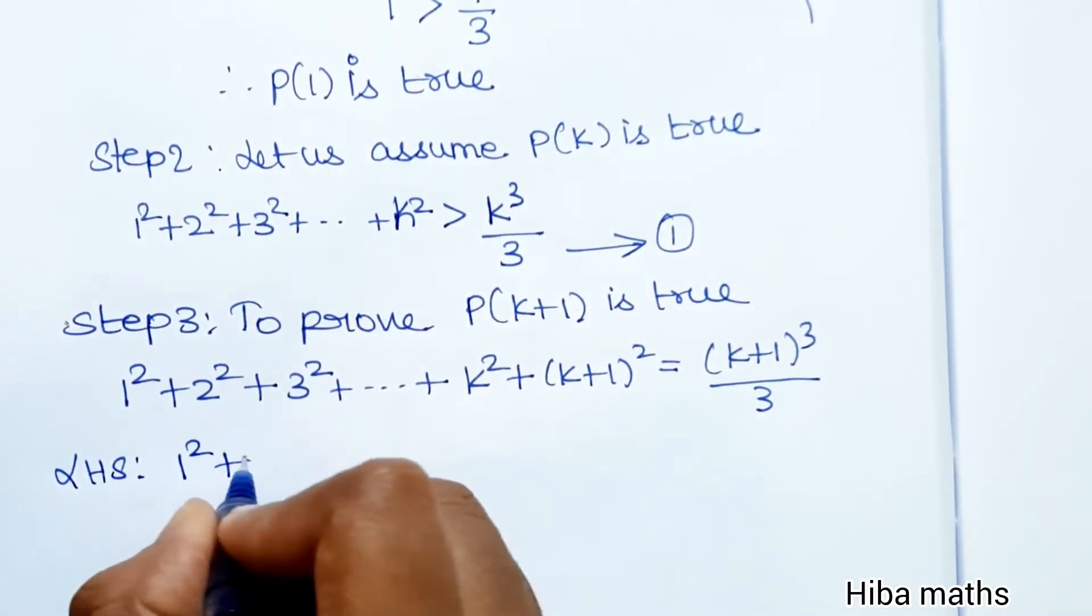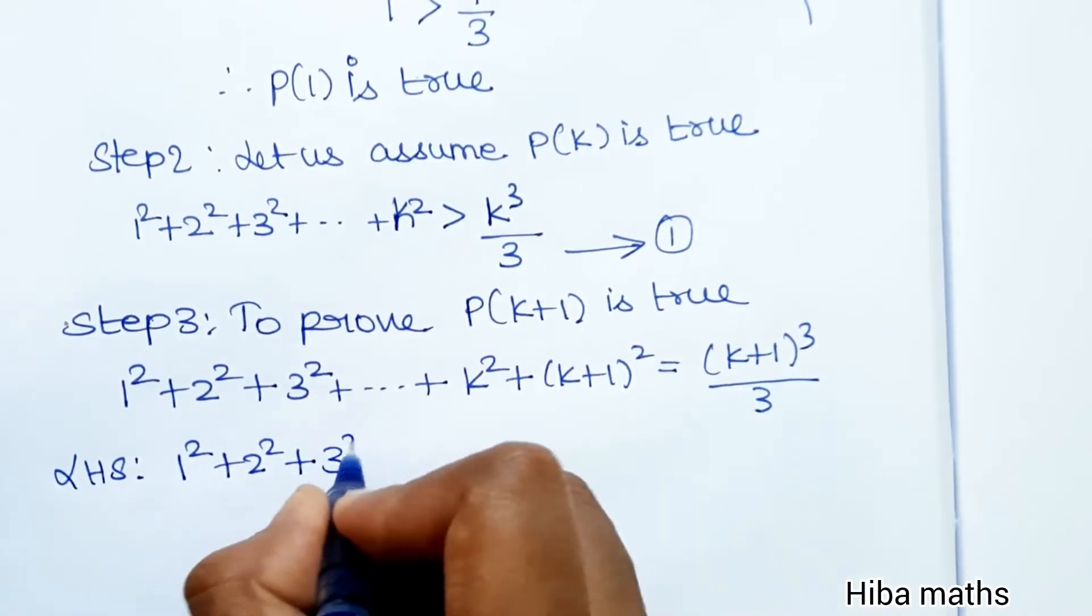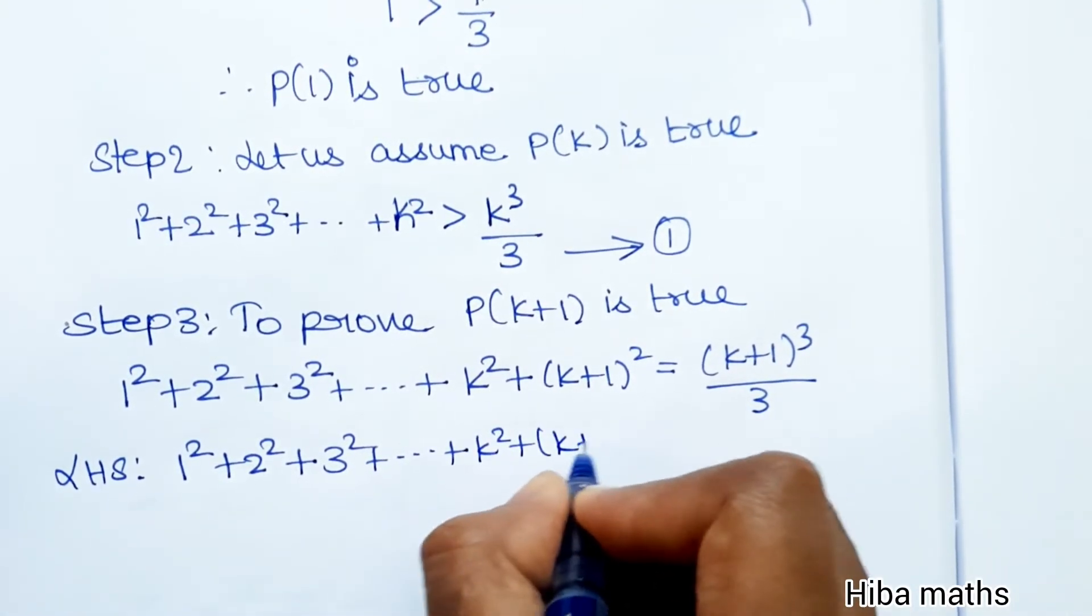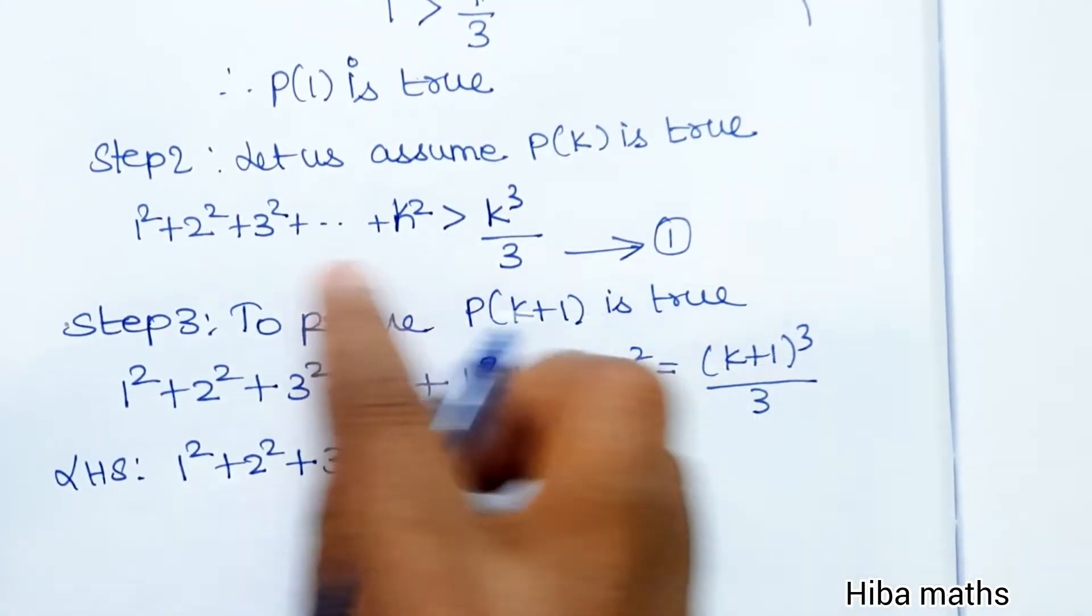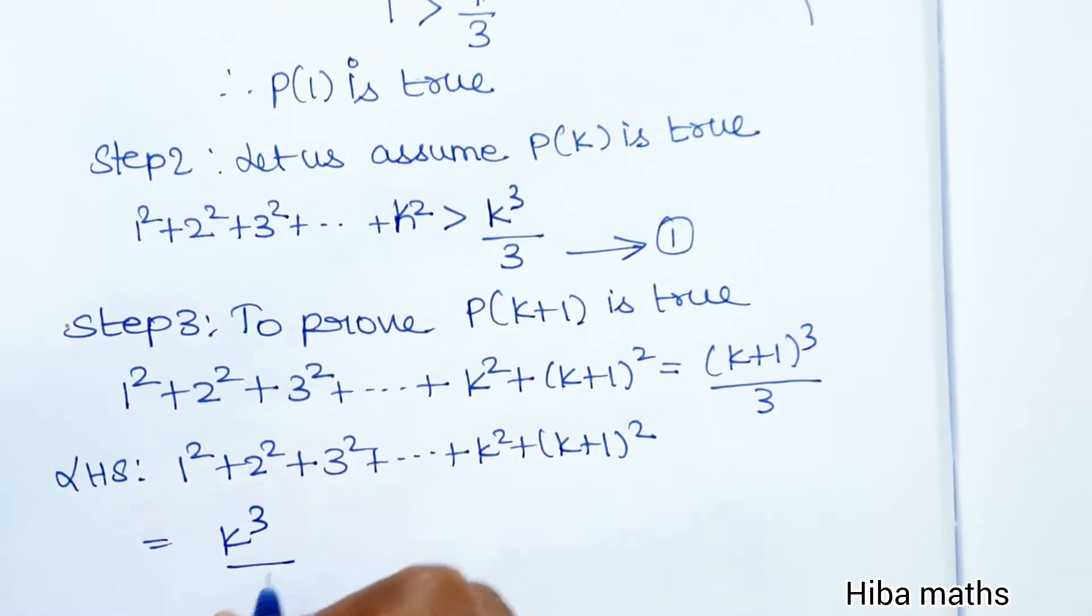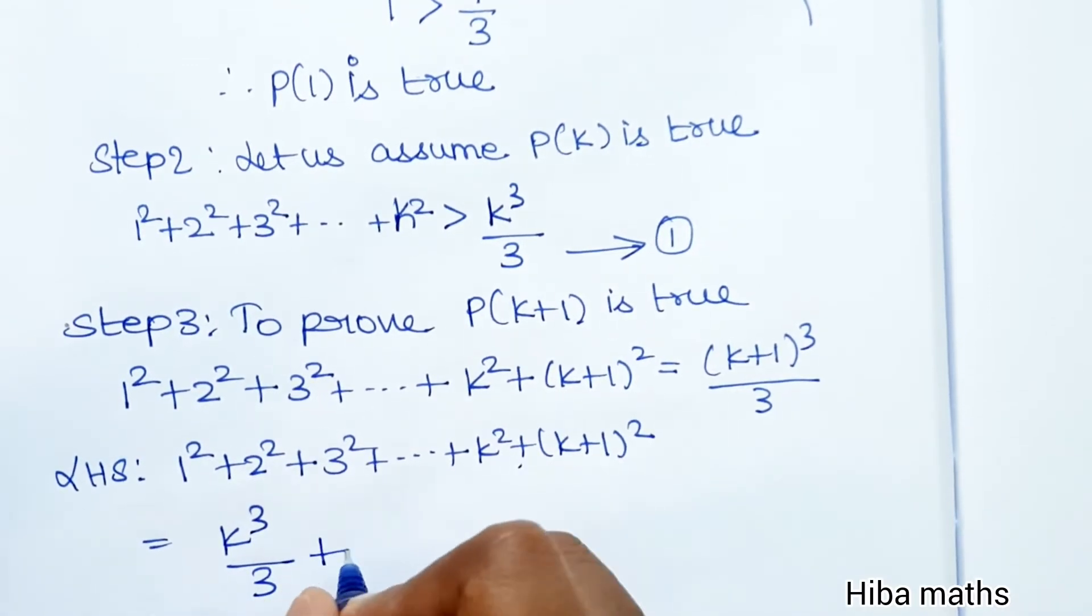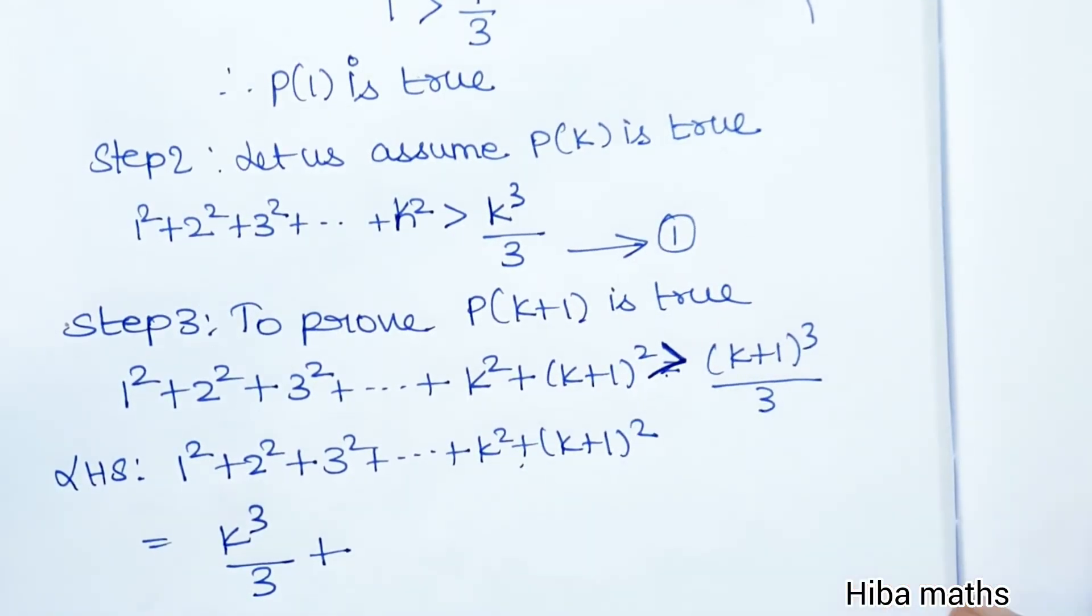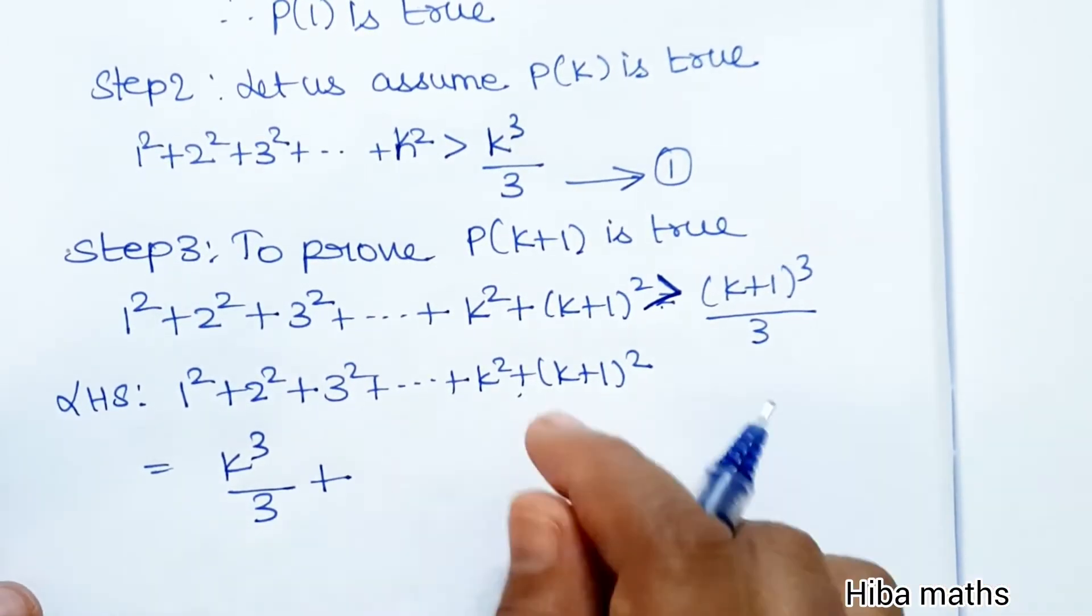LHS = 1² + 2² + 3² + ... + k² + (k+1)². From Step 2, we know 1² + 2² + ... + k² > k³/3, so this equals k³/3 plus (k+1)².